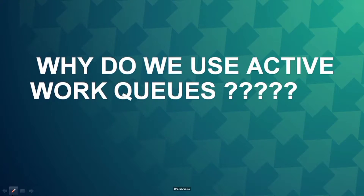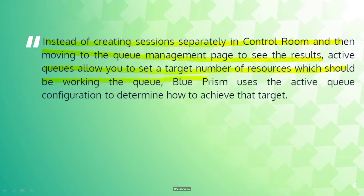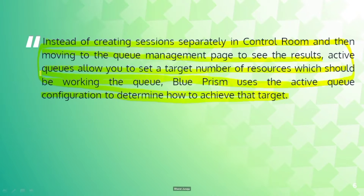In simple words, if we talk about active queues or why do we use active work queues, instead of creating sessions separately in control room and then moving to the queue management page to see the results, active queues allows you to set a target number of resources which should be working the queue. Blue Prism uses the active queue configuration to determine how to achieve that target. So if you use an active queue, you don't need to run a session manually or by a scheduler. Blue Prism itself will trigger the session for you, depending upon the target resources on which you want to trigger the process.